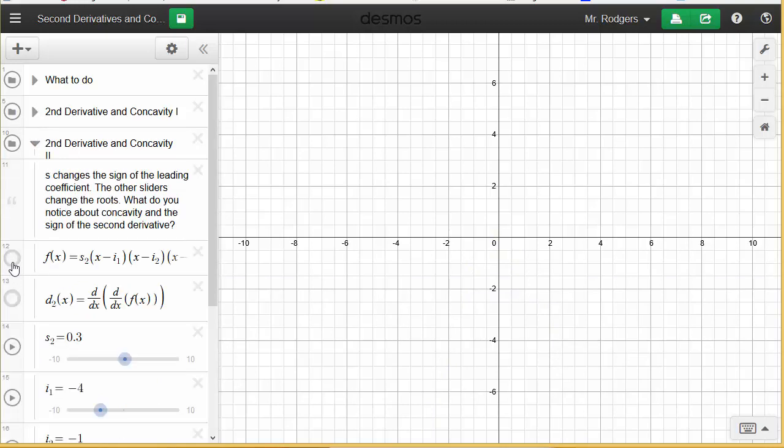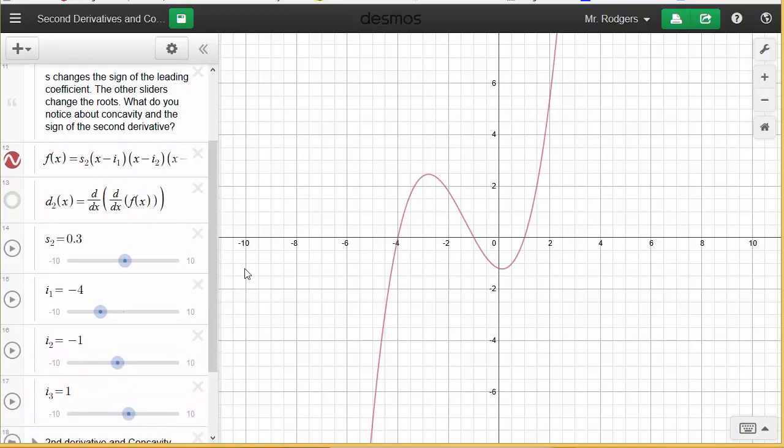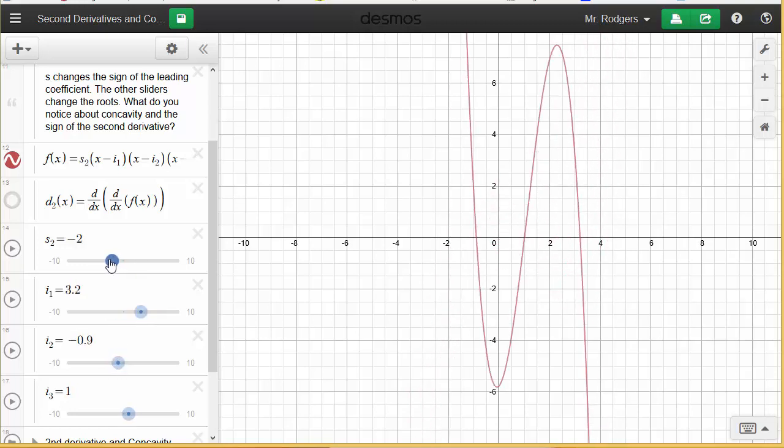The next one is even more interesting because it's third degree, so you'll notice there's an interval of concave down and concave up. You can change it around using these sliders which control the intercepts, or you can flip it up and down using these.